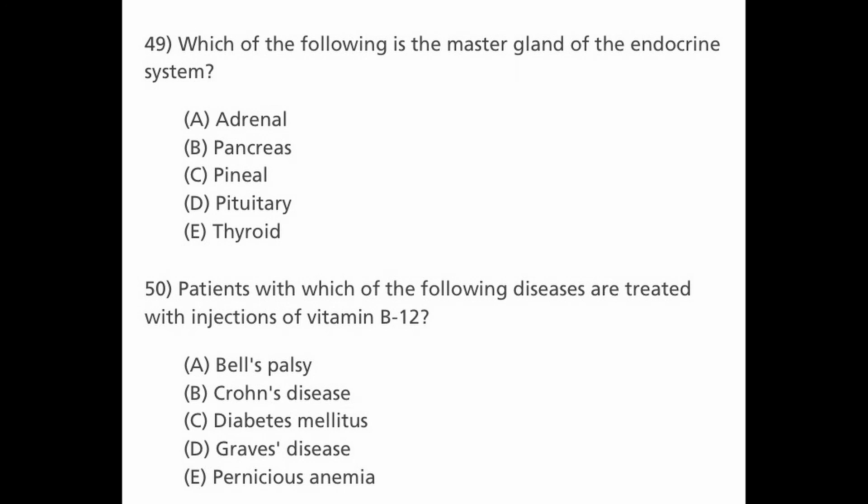Next question: patients with which of the following diseases are treated with injection of vitamin B12? Options are A. Bell's palsy, B. Crohn's disease, C. Diabetes mellitus, D. Graves' disease, and E. Pernicious anemia. The answer is E, pernicious anemia, which is treated with injection of vitamin B12.